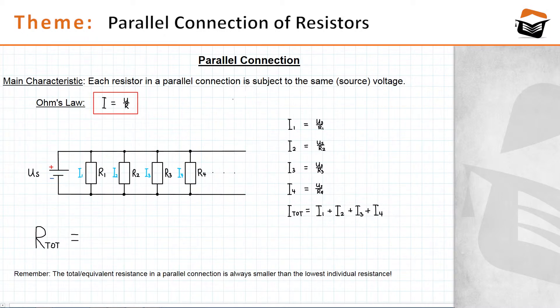In a parallel connection, it's a bit different. For a parallel connection, the total resistance, or the equivalent resistance, is equal to the inverse of the sum of the inverses of each single resistance.